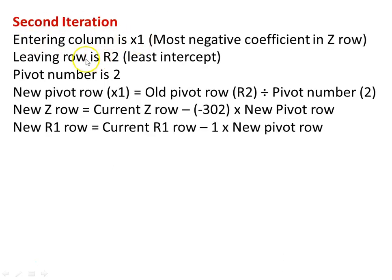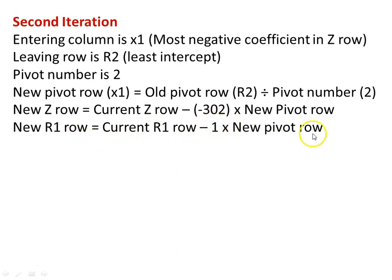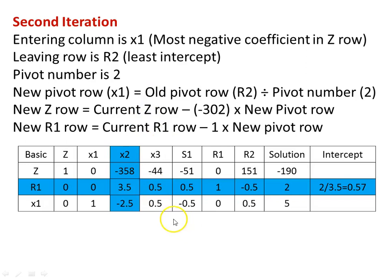The entering column is x1, the leaving row is r2, and the pivot number is 2. We calculate: new pivot row equal to old r2 row divided by the pivot number; new z-row equal to current z-row minus its entering column coefficient times the new pivot row; new r1-row equal to current r1-row minus its entering column coefficient times the new pivot row.